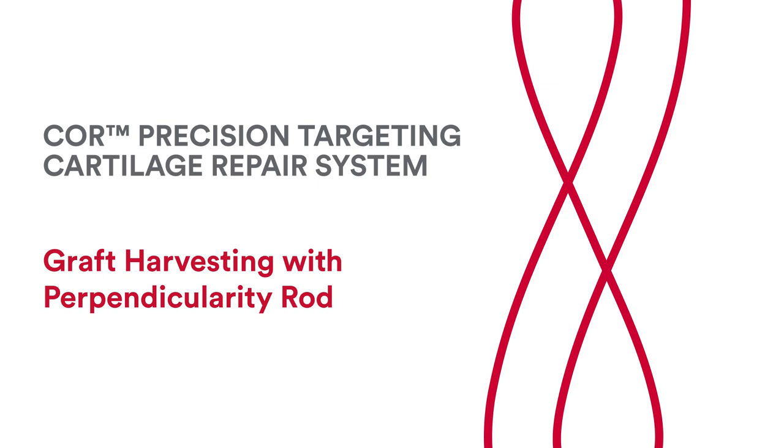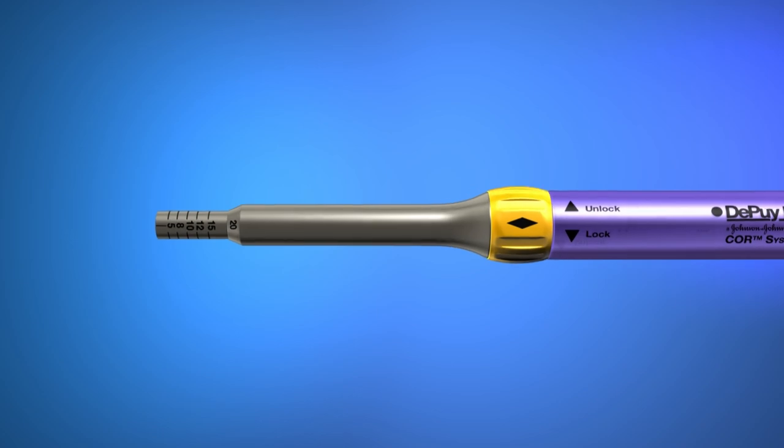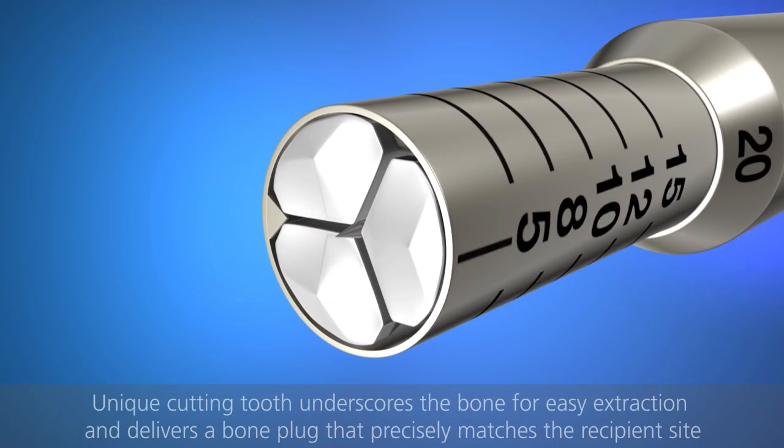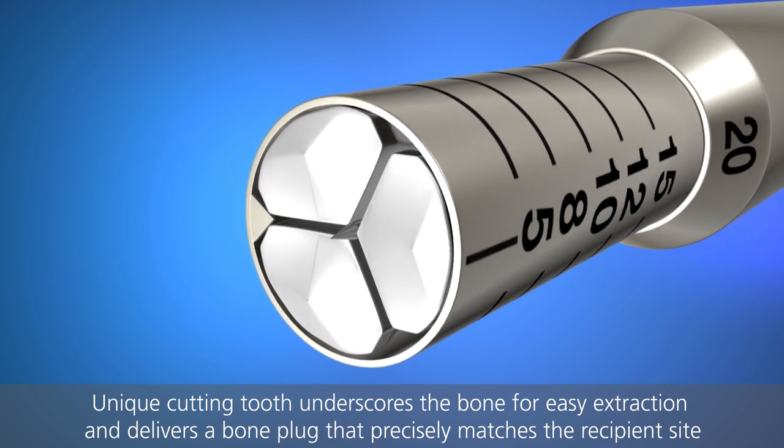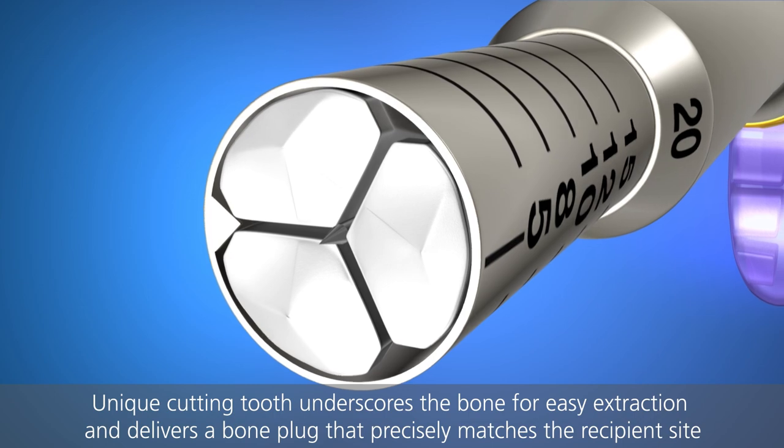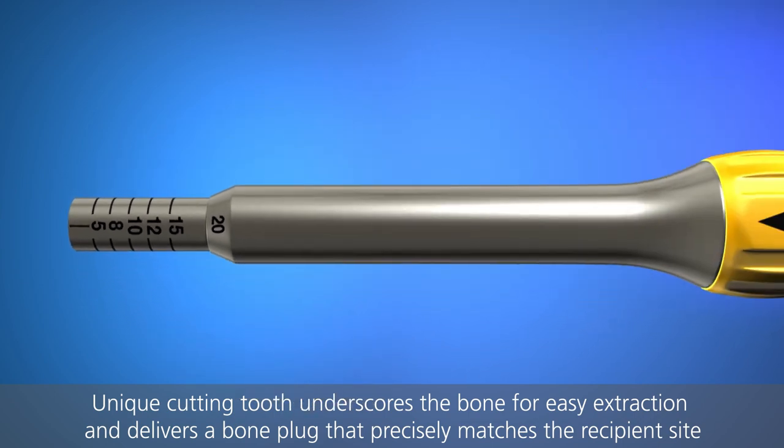Graft harvesting with perpendicularity rod. Prepare for graft harvesting by inserting the perpendicularity rod into the distal end of the harvester delivery guide or cutter. The rod is properly seated when it engages with the cutting tooth on the harvester cutter. The cutting tooth, a unique feature of the core system, underscores the cancellous bone at the distal end of the harvester tube and allows for a precise depth cut.